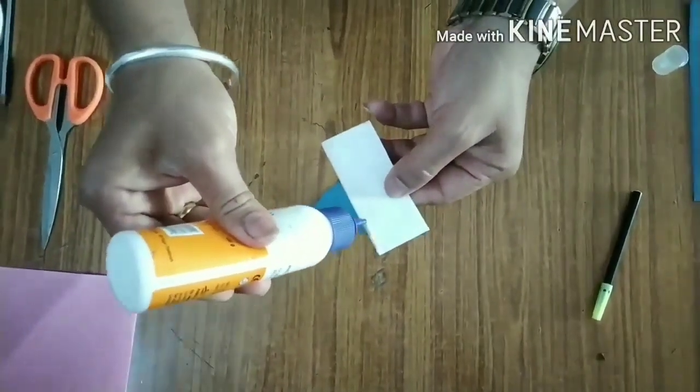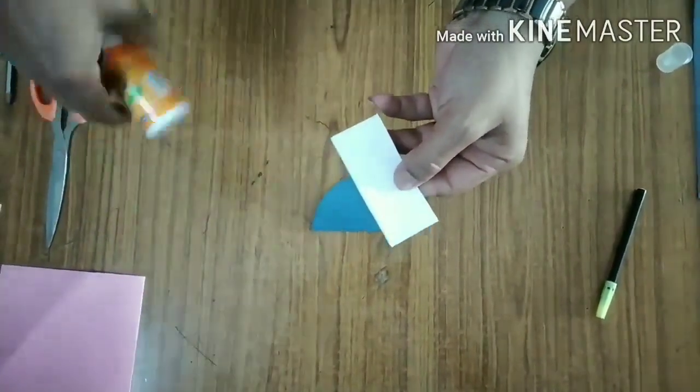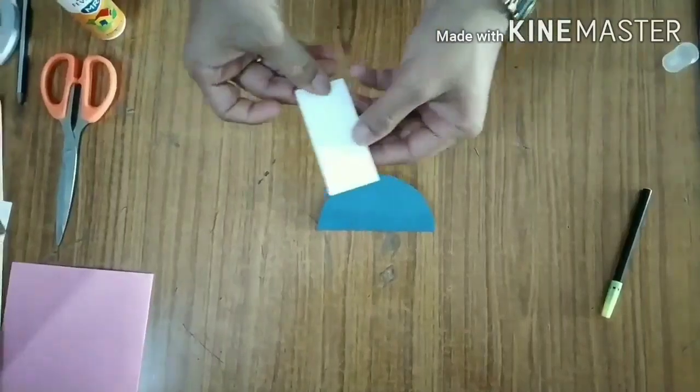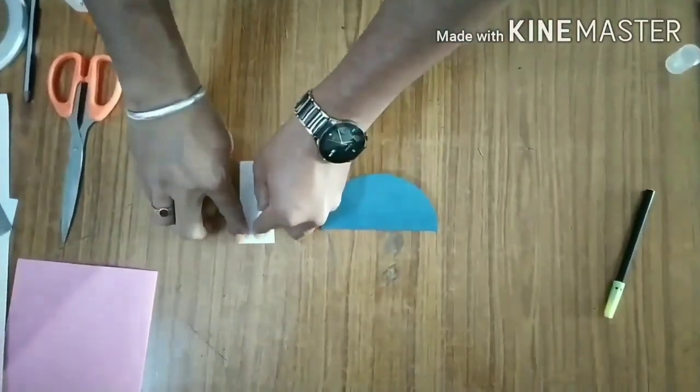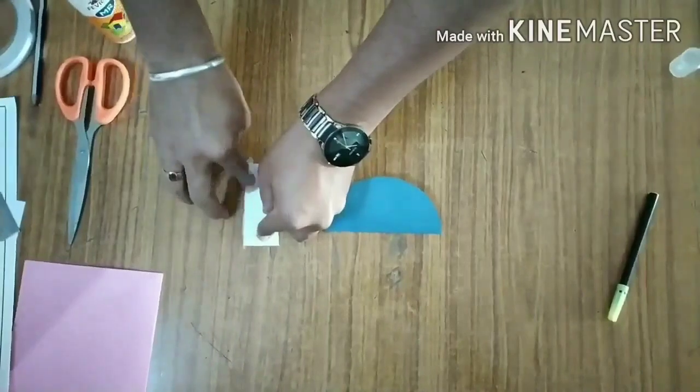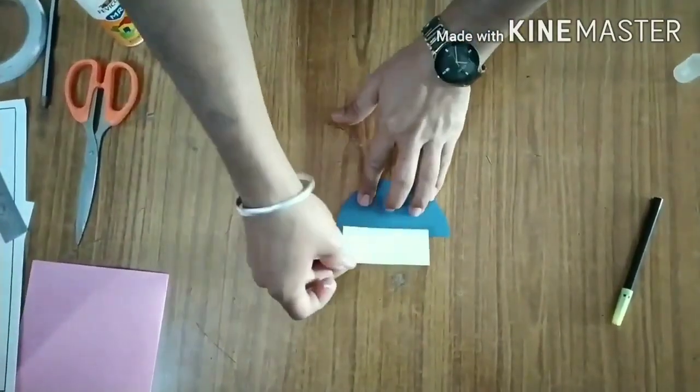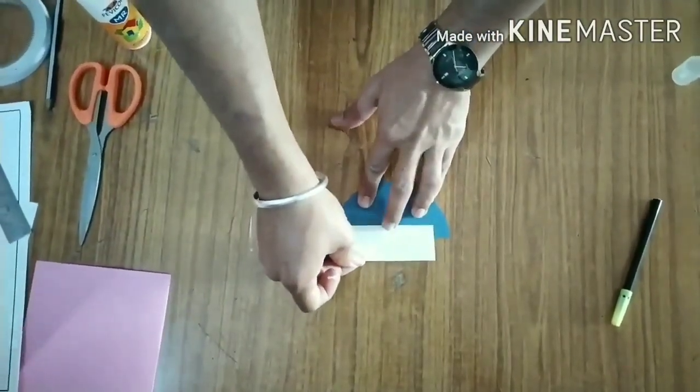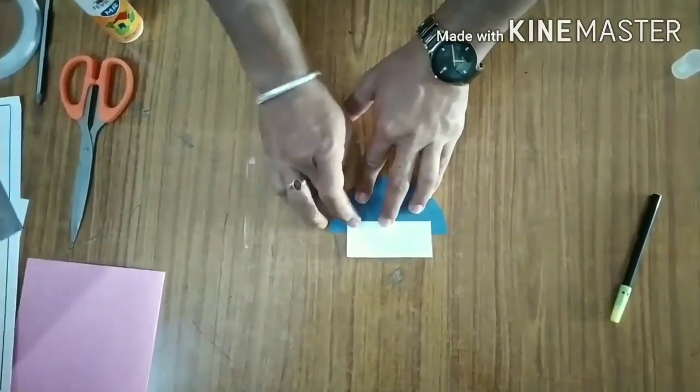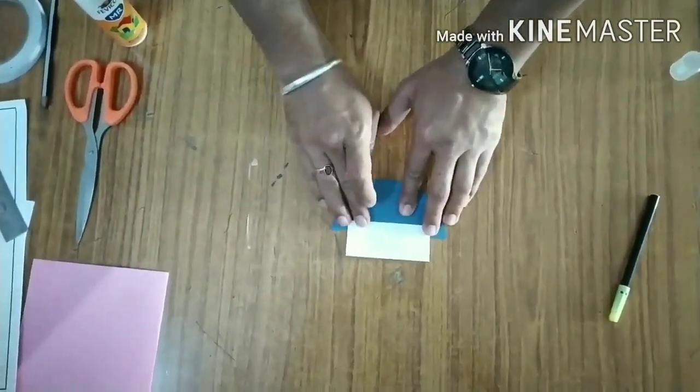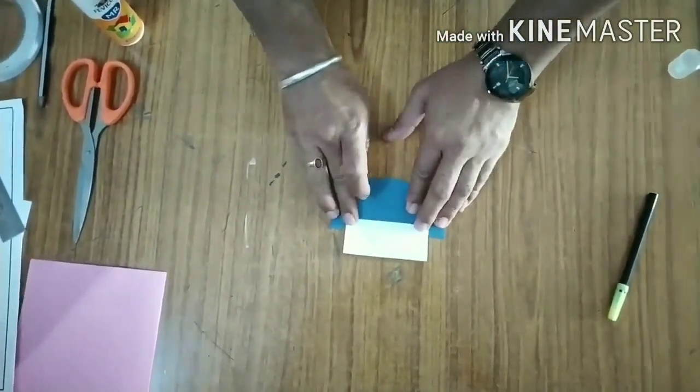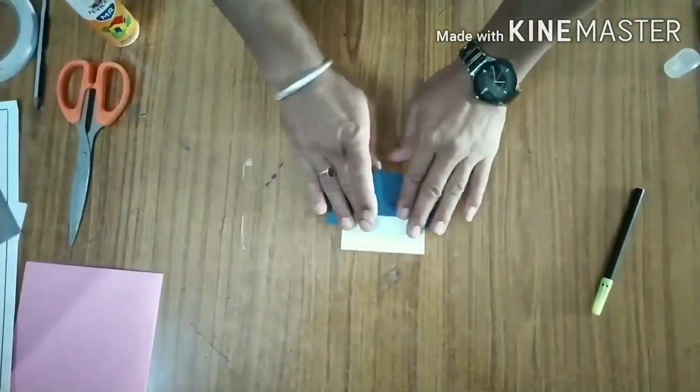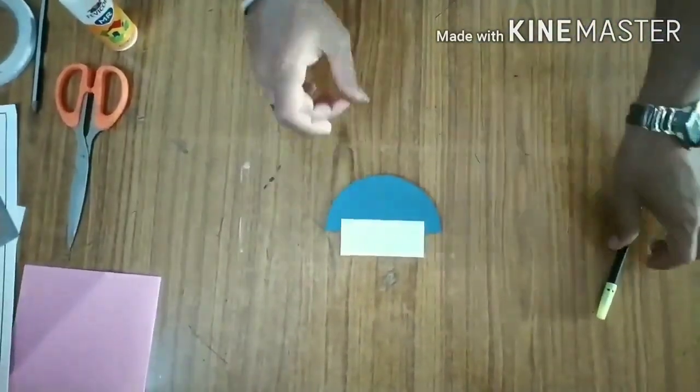Paste the strip to the folded circle with fevicol. Make sure that the strip should not be bigger than the folded circle.